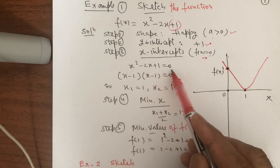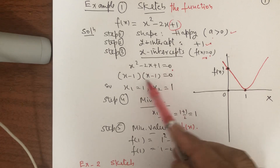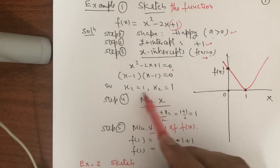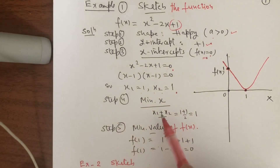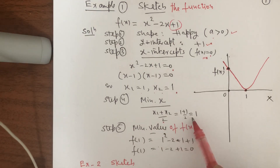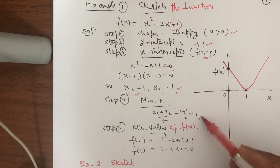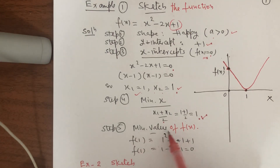x² - 2x + 1 = 0. The factors of the left-hand side are (x - 1)(x - 1) = 0. Using the factoring technique, we get x₁ = 1 and x₂ = 1. Step 4: the minimum value of x is (x₁ + x₂)/2 = (1 + 1)/2 = 1. Putting this minimum x into the function gives the minimum value of f(x): f(1) = 0.